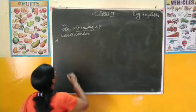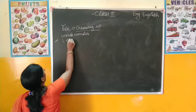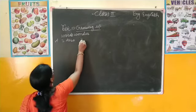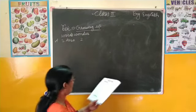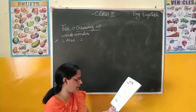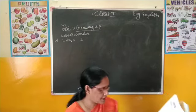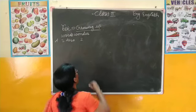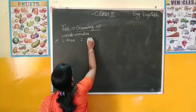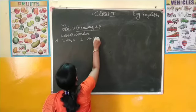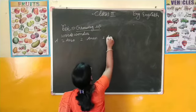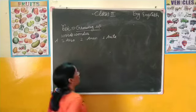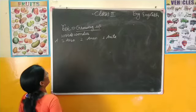इसमें सबसे पहले First Number पे Aro दिया गया है, जो already लिखा हुआ है। उसके बाद Second Number जो होगा, वो भी A पे होना चाहिए। इसमें A पे Aman और Anita दिया हुआ है। तो इसमें A, M, A, N - Second Number पे कौन होगा, और Third Number पे Anita।